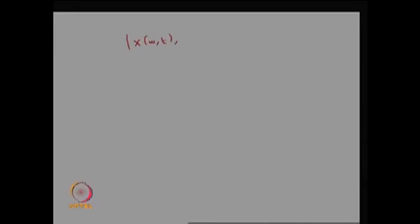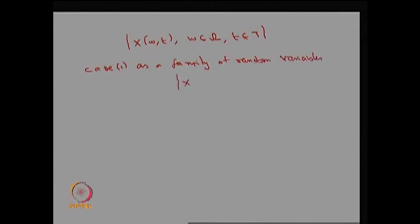Based on the values, the way I have explained, the random variable or the stochastic process is going to be X(w, t) where w belongs to omega and t belongs to capital T. There are two approaches to define the stochastic process. The first one, Case 1, is to define it as a family of random variables X(·, t) where t belongs to capital T.